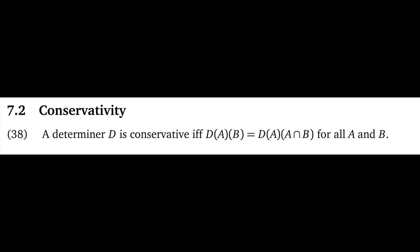A final note: one might be able to make the case that conservativity is a property of natural language determiners because it facilitates a certain kind of processing strategy. Conservativity tells you that you don't need to consider the entire verb phrase — rather, you can just consider the verb phrase as intersected with the restriction. That might lead to faster processing strategies, making determiners more efficient for people to evaluate than if you always had to check the entirety of the verb phrase meaning.